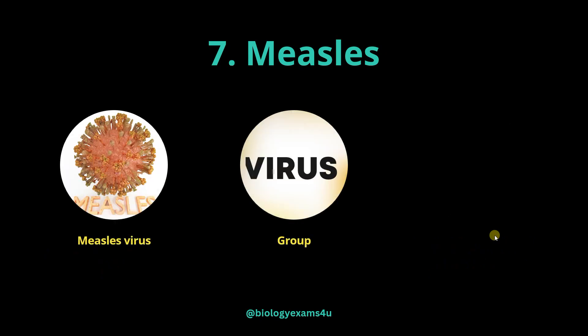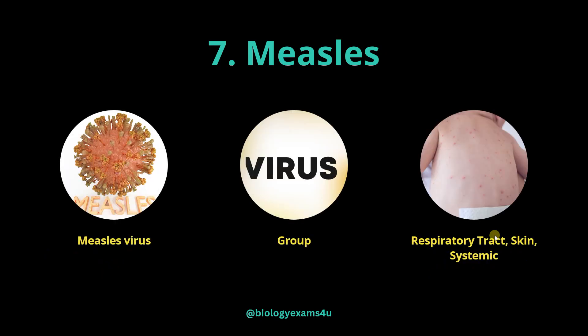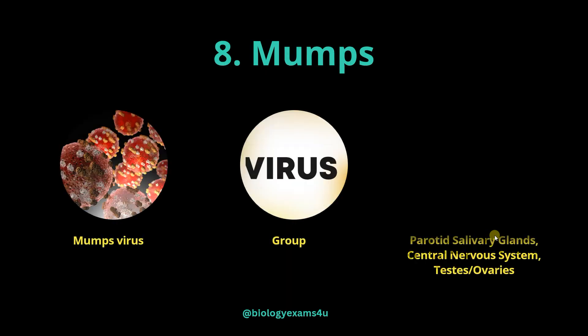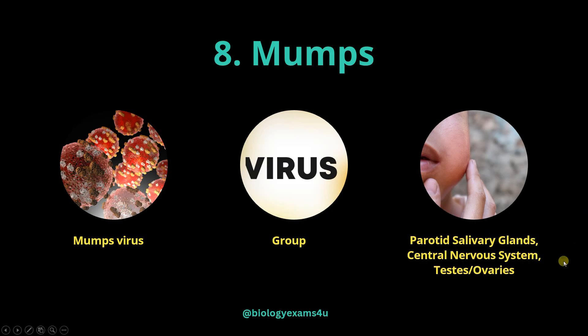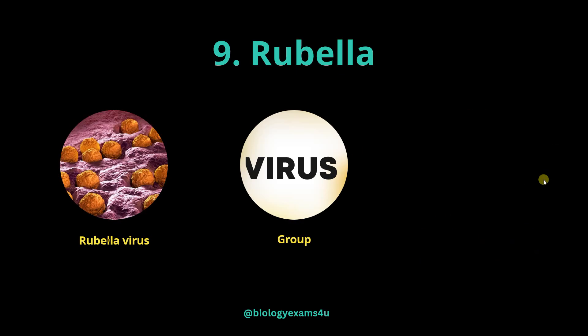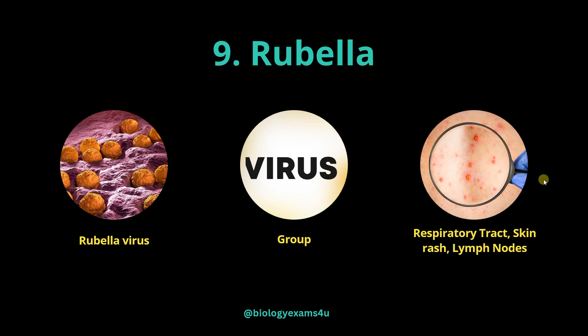Measles is caused by measles virus. The primary site of infection is the respiratory tract, and symptoms are seen on the skin. It is a systemic infection that causes infections throughout the body. Mumps is caused by mumps virus and primarily affects the parotid salivary glands, central nervous system and also the genitals — testis and ovary. Rubella is caused by rubella virus and primarily infects the respiratory tract, causing skin rashes, and also infects lymph nodes.